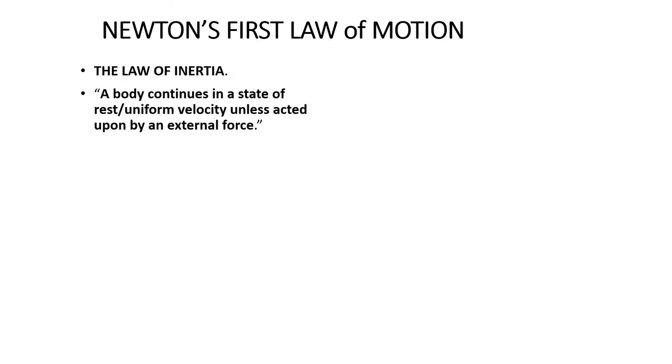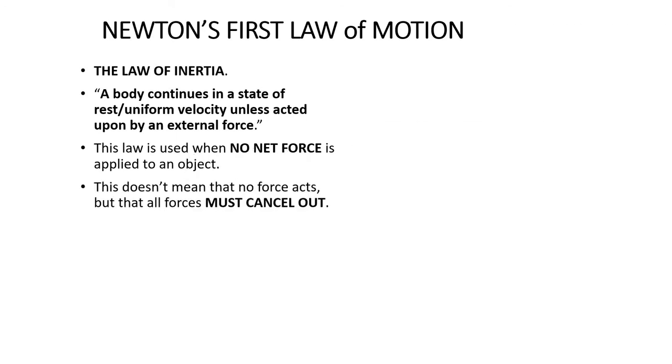So let's get started. The first law of motion is the law of inertia. So this law states that a body will continue in a state of rest or uniform velocity unless it is acted upon by an external force. Now this law is used when there is no net force applied to an object. What net force means is the result of all the different forces acting on it. So if they are all balanced, then there is no net force.